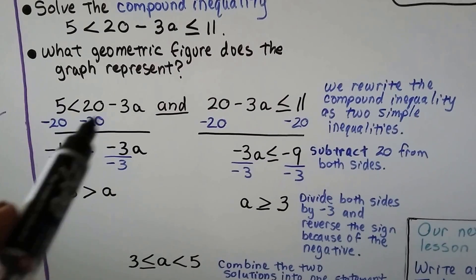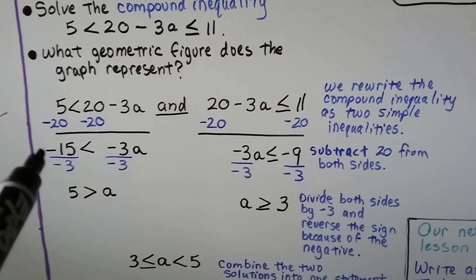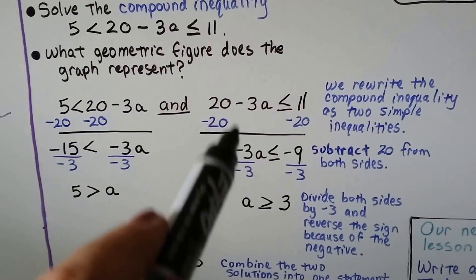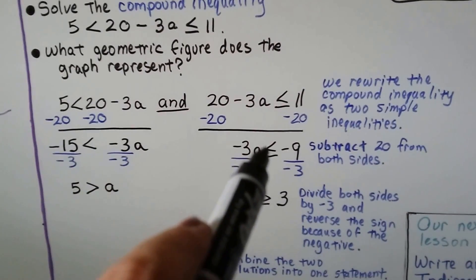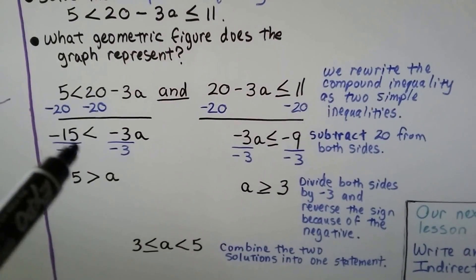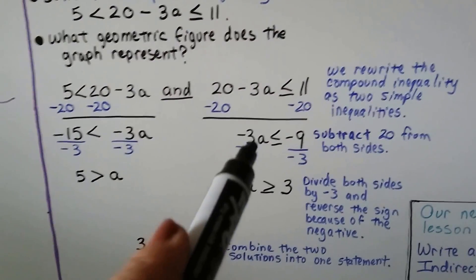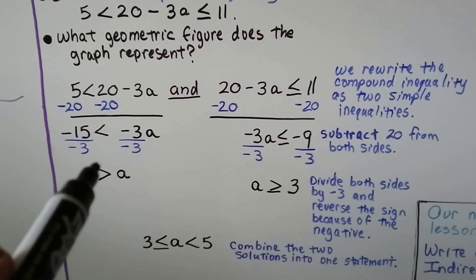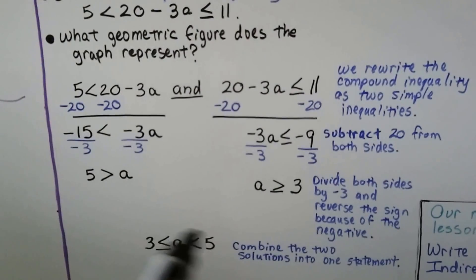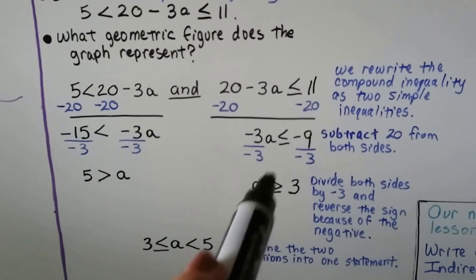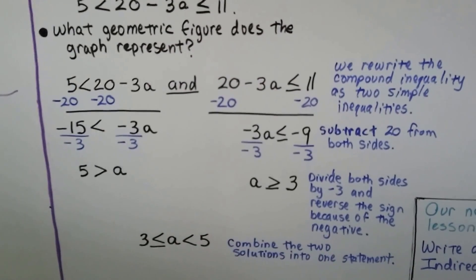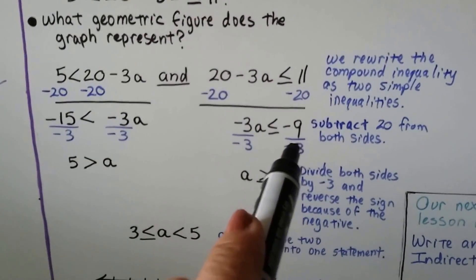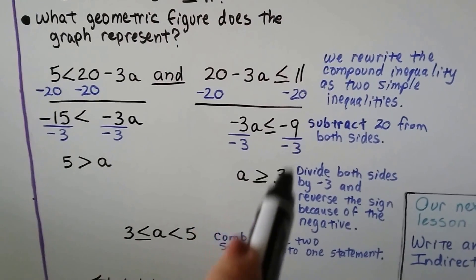We start by subtracting 20 from both sides of each inequality. We get −15 < −3a and −3a ≤ −9. Now we divide both sides by the coefficient −3. Because we're dividing by a negative, the inequality signs flip. That gives us a > 5 and a ≥ 3.